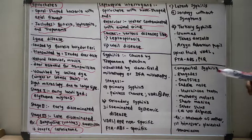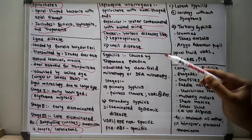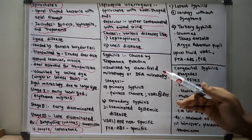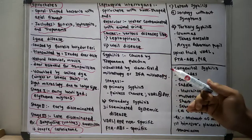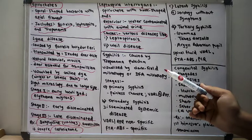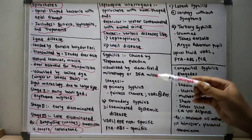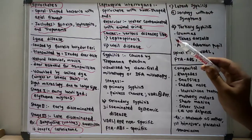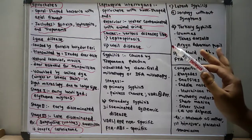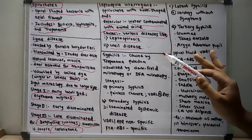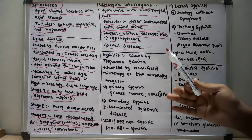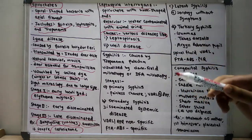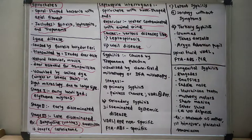Weil's disease is also known as ictero-hemorrhagic leptospirosis. It is the severe form characterized by jaundice and azotemia from liver and kidney dysfunction. There is also presence of fever, hemorrhage and anemia.